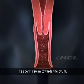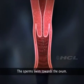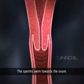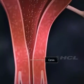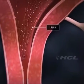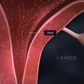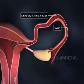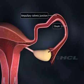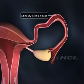Human sperms are motile and rapidly swim towards the ovum, lying in the fallopian tube. The sperms pass the cervix, enter the uterus, and finally reach the ampullary isthmic junction of the fallopian tube. This is the site where the ovum lies and fertilization takes place.